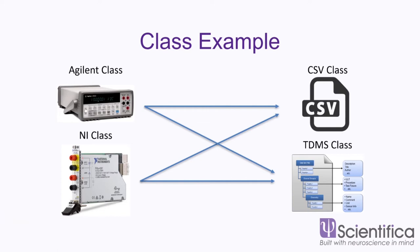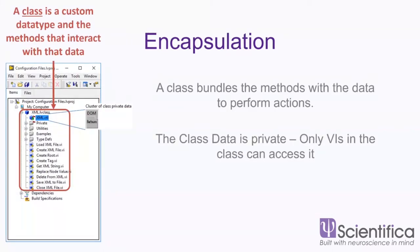So we want to have any combination of these, and object-oriented programming allows us to implement these different combinations. On the board, we can see a class — it has a little blue icon in your Project Explorer. In this case it's an XML markup language wrapper API. This class has some private data as well: a document object model reference inside it. Notice how there's a little red key next to that control — that key means only VIs within that class can access it.